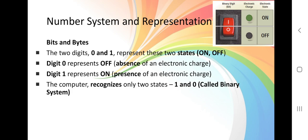Meanwhile, digit 1 represent on, presence of an electronic charge. The computer recognizes only two states 1 and 0 called binary system.